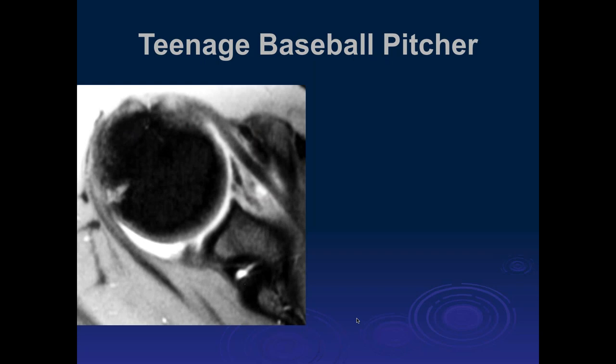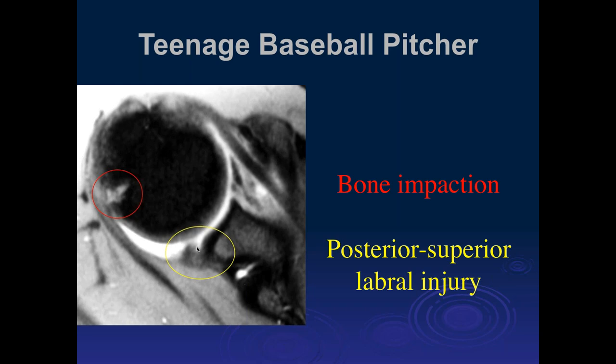Thomas, what do you think of this case — a teenage baseball player? There's some irregularity at the posterior superior humeral head. That could be posterior impingement, but you also need some of the other components, because this alone could just be a traction injury. But we can also see a posterior superior labral tear.